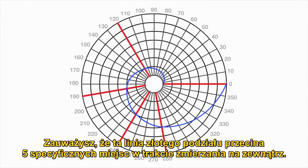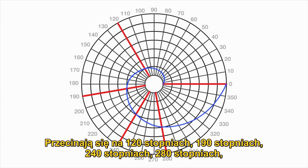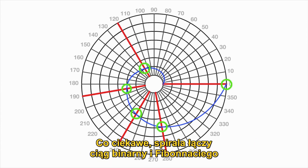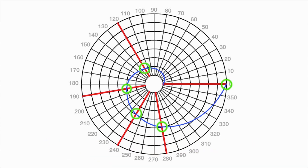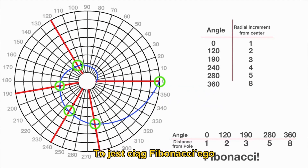If you plot a golden mean spiral at zero degrees on the polar graph, it will loop all the way around before hitting zero again, exactly at the eighth circle. You'll find that this golden mean line crosses five specific places as it goes out — where the female circular lines meet the male lines. It crosses at 120 degrees, 190 degrees, 240 degrees, 280 degrees, and then jumps to 360, or back at zero, depending on how you look at it. Looking at the radial increments from the center, it crosses at 1, 2, 3, 5, and 8 — that's Fibonacci.